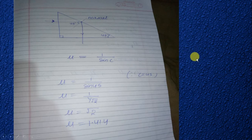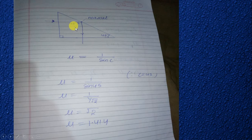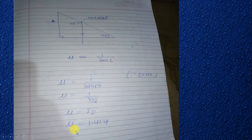In the second method, as shown in the figure, the angle of incidence will be 45 degrees. Now we are calculating the refractive index for the angle 45 degrees. Using this relation, since sin 45° = 1/√2, we get the value of refractive index μ = 1.414 when the critical angle C is equal to 45 degrees.